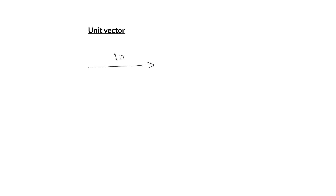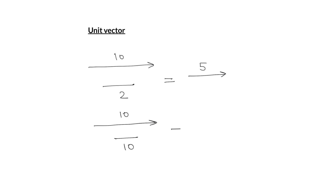The next term is the unit vector. If you have a vector of magnitude 10 Newton and divide it by the scalar quantity 2, you get a vector of magnitude 5 in the direction of the initial vector. Now if you divide a vector of magnitude 10 by its own magnitude 10, you get a vector of magnitude 1 in the direction of the initial vector — this is the unit vector.